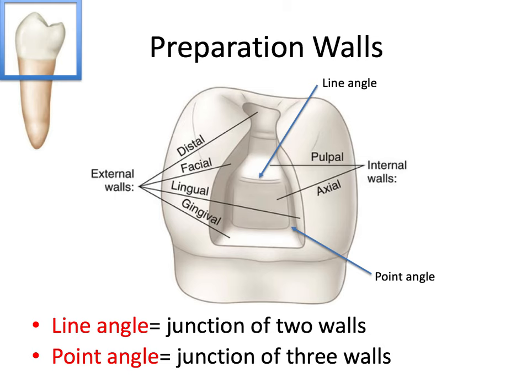Some more essential definitions: the junction formed between two walls of a cavity preparation is called the line angle. The junction between the pulpal floor and the axial wall is a line angle, and anywhere two walls meet — you could pick any point — those are all called line angles.